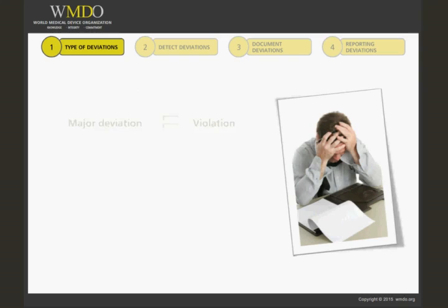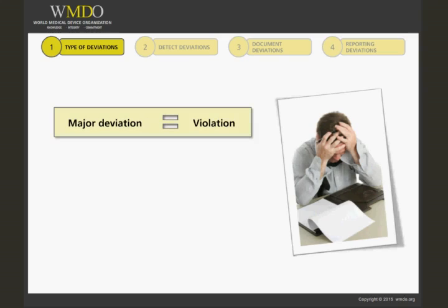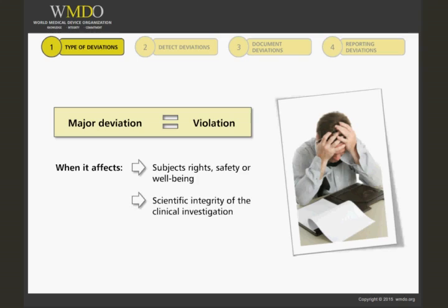A deviation is considered major — otherwise called a violation — when it affects subjects' rights, safety, or well-being, or the scientific integrity of the clinical investigation.